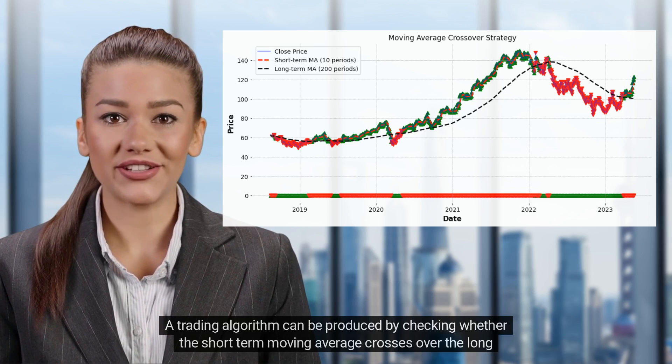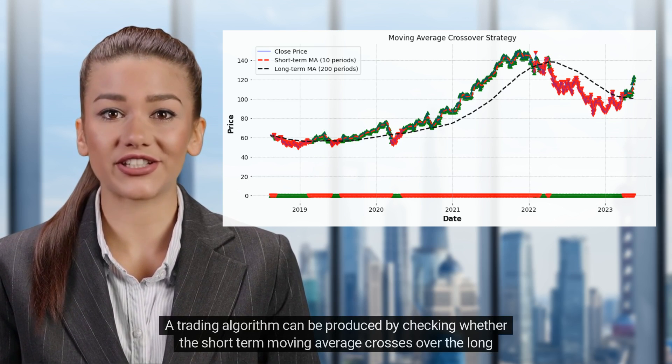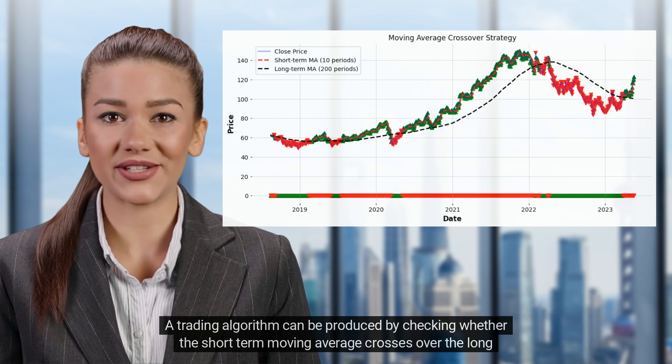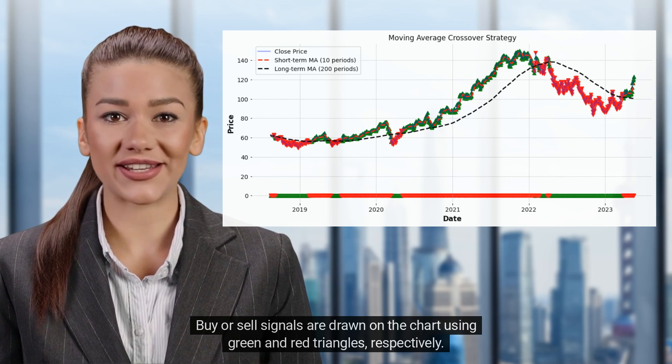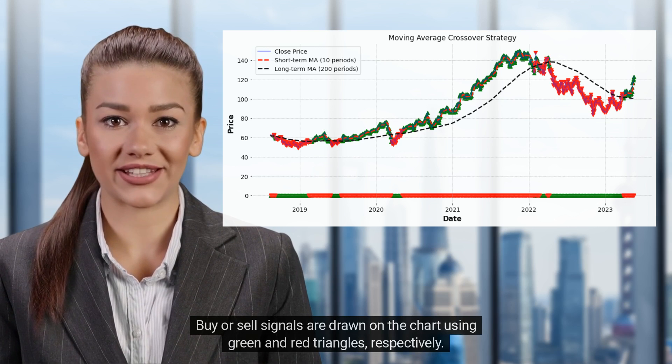A trading algorithm can be produced by checking whether the short-term moving average crosses over the long-term moving average. Buy or sell signals are drawn on the chart using green and red triangles, respectively.